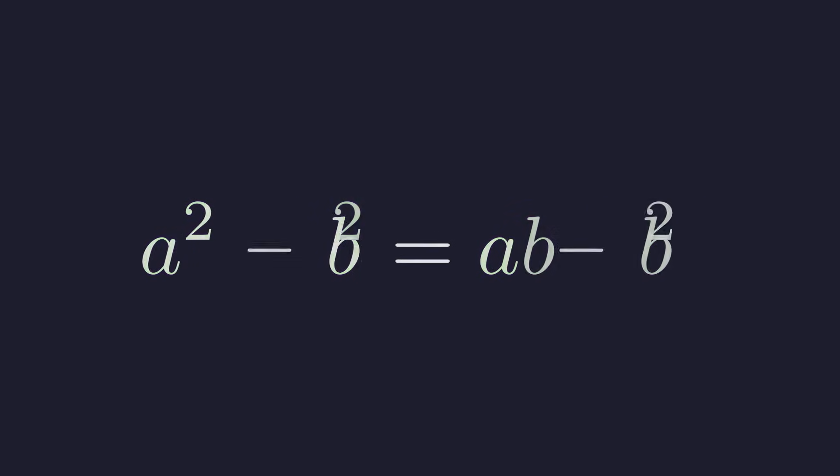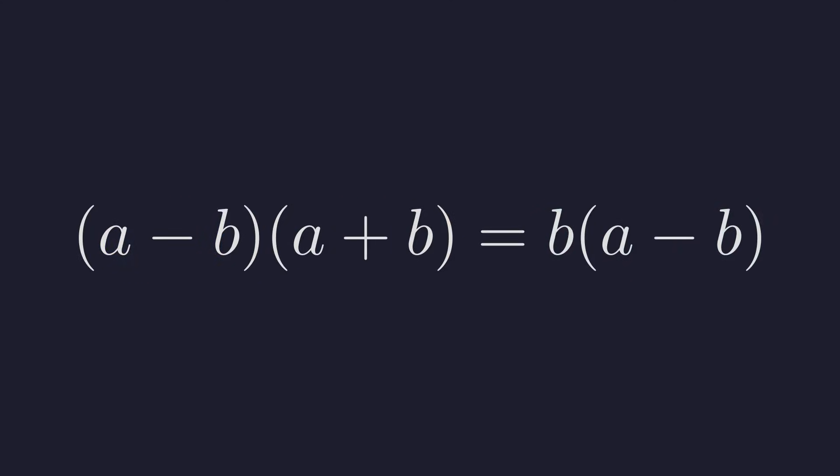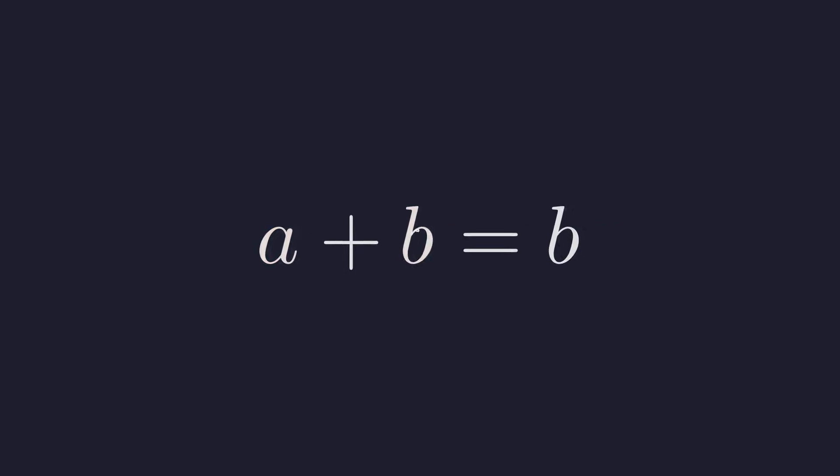This results in a squared minus b squared equals ab minus b squared. Both sides can be factored. The left becomes a difference of squares: a minus b times a plus b, and on the right we factor out ab. Here's the trap: we see the term a minus b on both sides and are tempted to cancel it. Dividing both sides by a minus b, we are left with a plus b equals b. Recalling our initial assumption that a equals b, we substitute.